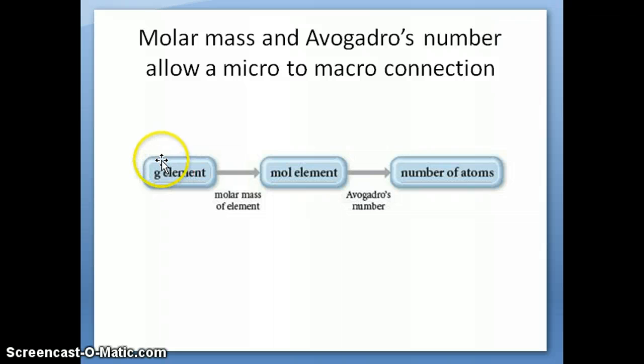First you take the mass and convert it to moles. To do this conversion, you're going to need the molar mass of that element, or the molar mass of the compound if you're converting molecules or ions. Once you have that conversion to moles, the next step is to take the number of moles and convert it to atoms or compounds.